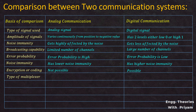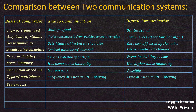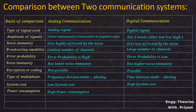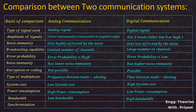Type of multiplexer: analog communication uses frequency division multiplexing; digital communication uses time division multiplexing. System cost: low for analog, high for digital. Power consumption: high for analog, low for digital. Bandwidth: analog communication has low bandwidth; digital communication has high bandwidth. Synchronization: complex in analog communication; very easy in digital communication compared to analog.